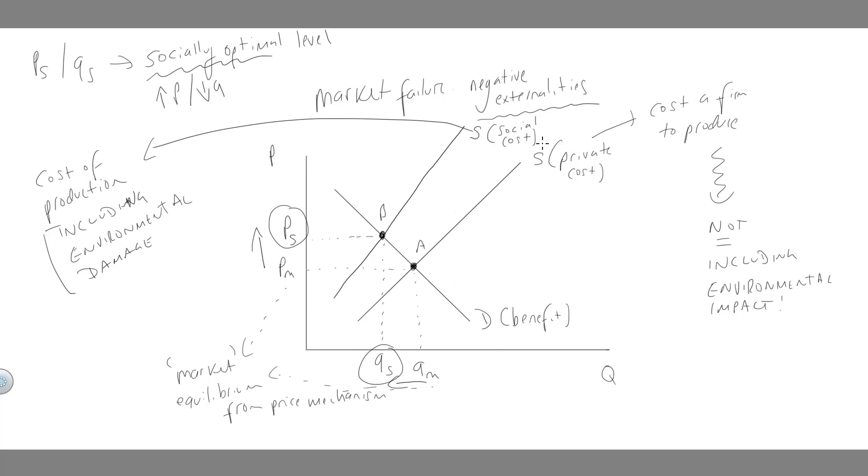So again, what we're saying here is that in our markets at the moment, we produce where demand is equal to private cost.